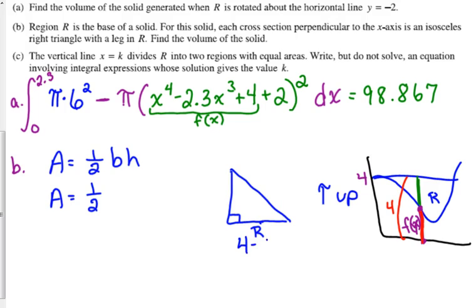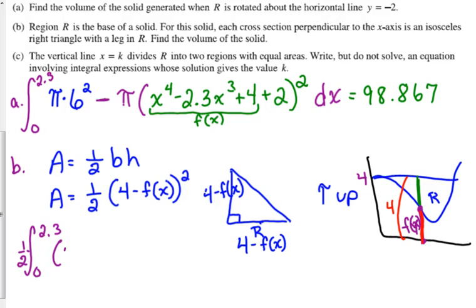So, these bases are 4 minus f of x. So, is the height. So, our area formula here really is one-half times 4 minus f of x squared. Base times height. Base and height are the same. So, it's squared. And once again, we start at 0. We're ending at 2.3. We already figured that out in the previous part. Those are our areas. That is the area of a cross section.